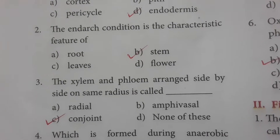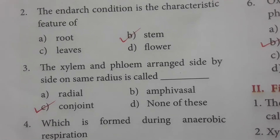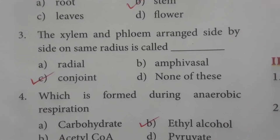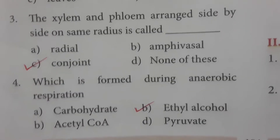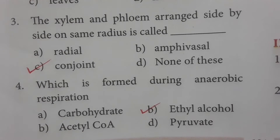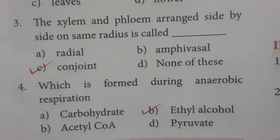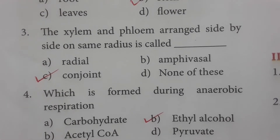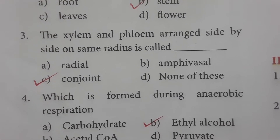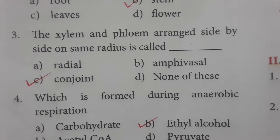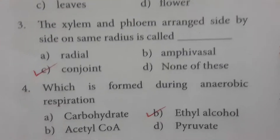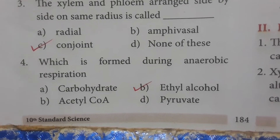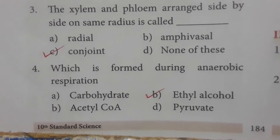The xylem and phloem arranged side by side on the same radius is called conjoint. Different radius arrangement is called radial. Same radius is conjoint. Ethyl alcohol is formed during anaerobic respiration.